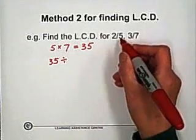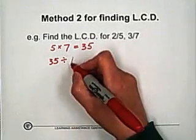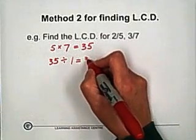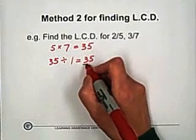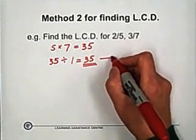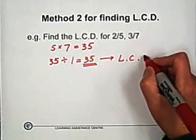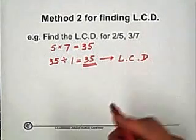They don't have common factors except 1. So the common factor with 5 and 7 is 1. So 35 divided by 1, still 35. So that's why in this situation, 35 is the least common denominator with 2 fifths and 3 sevenths.